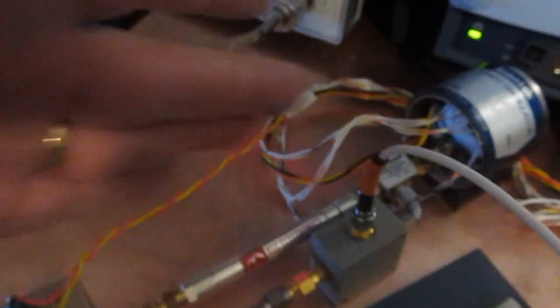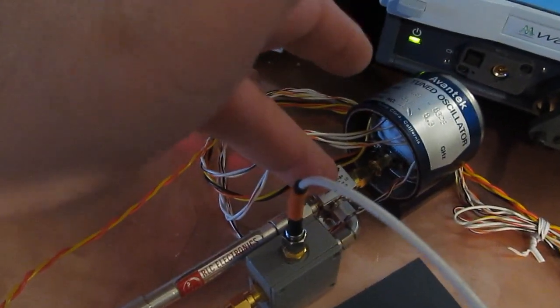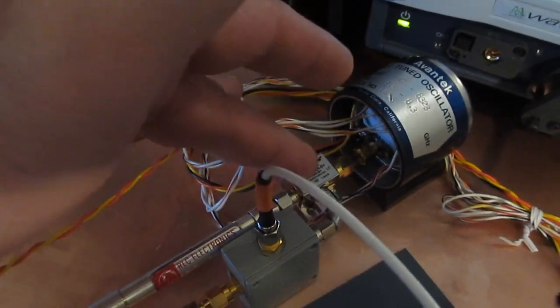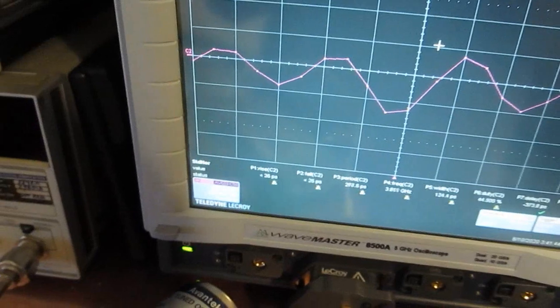So basically what I did is I raised this up 1 gigahertz. That pushes us down to roughly 4 gigahertz coming out. We are pretty much at the limit of the mixer but we are able to get a signal out of it. So hopefully that clears that up.